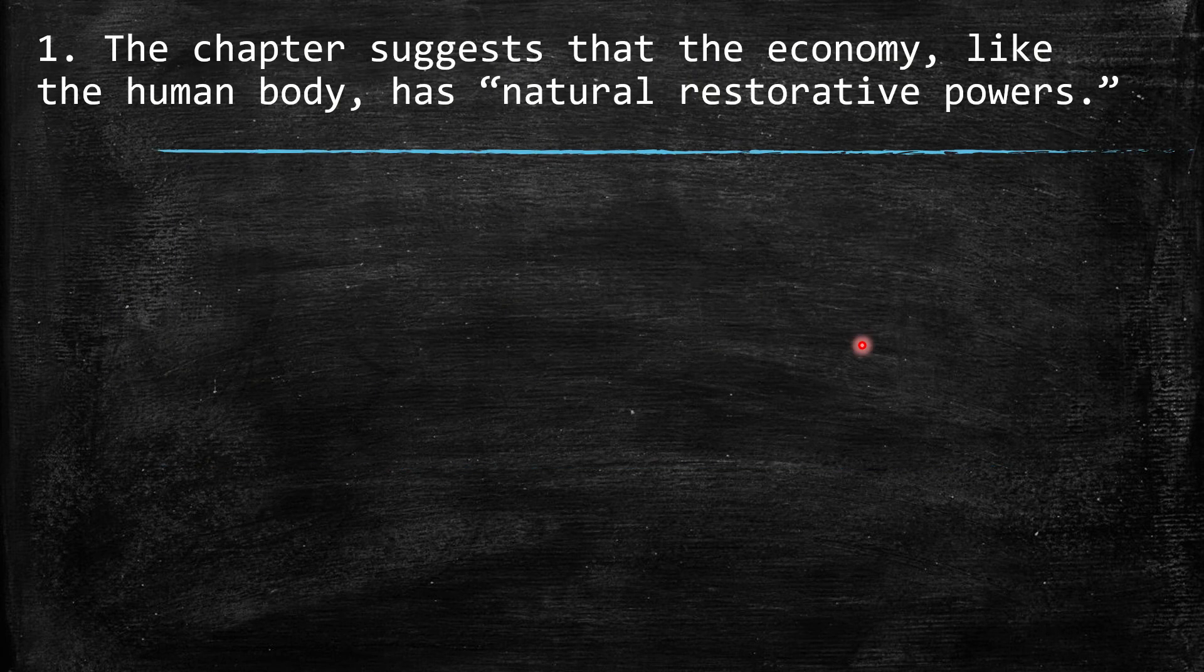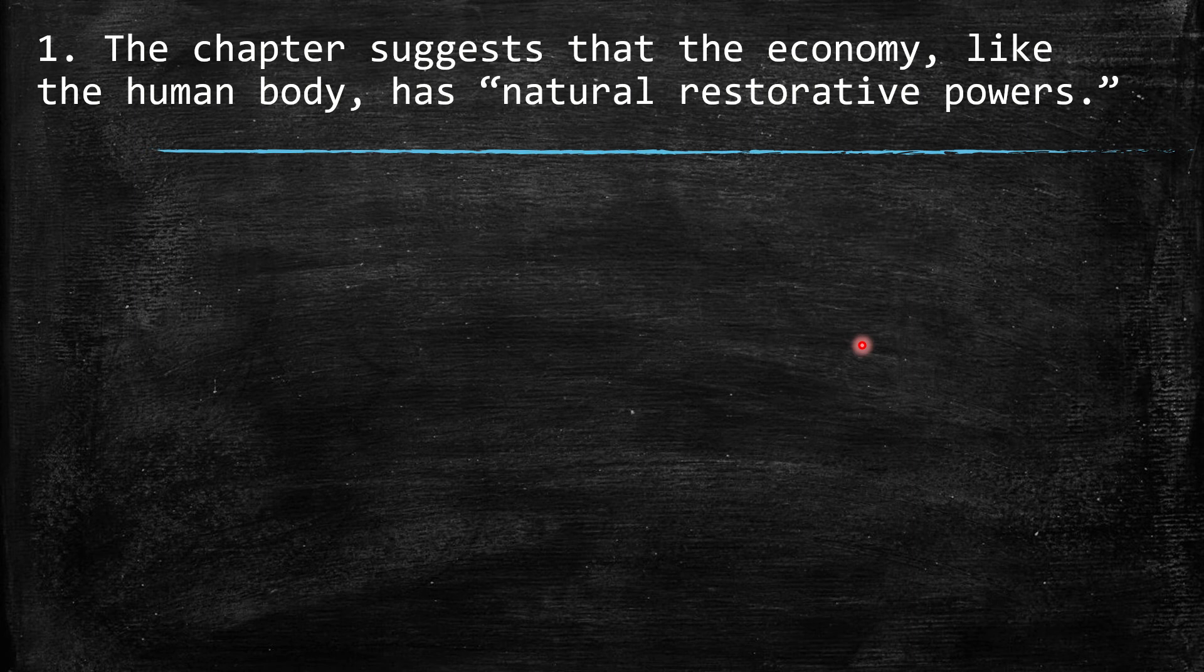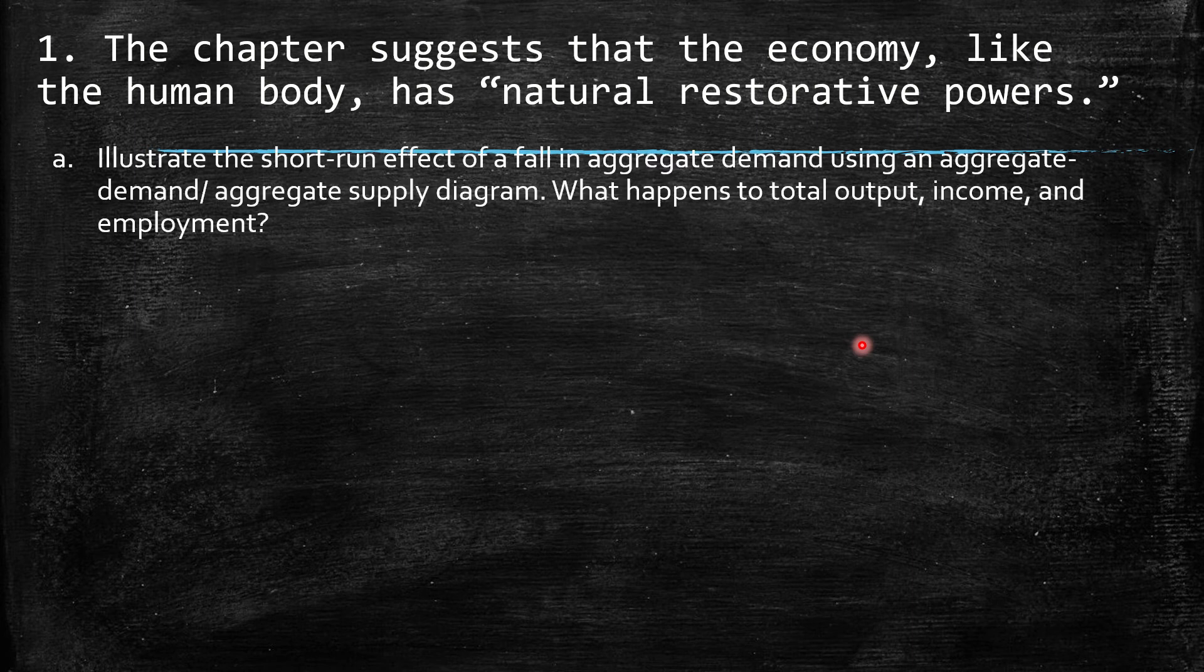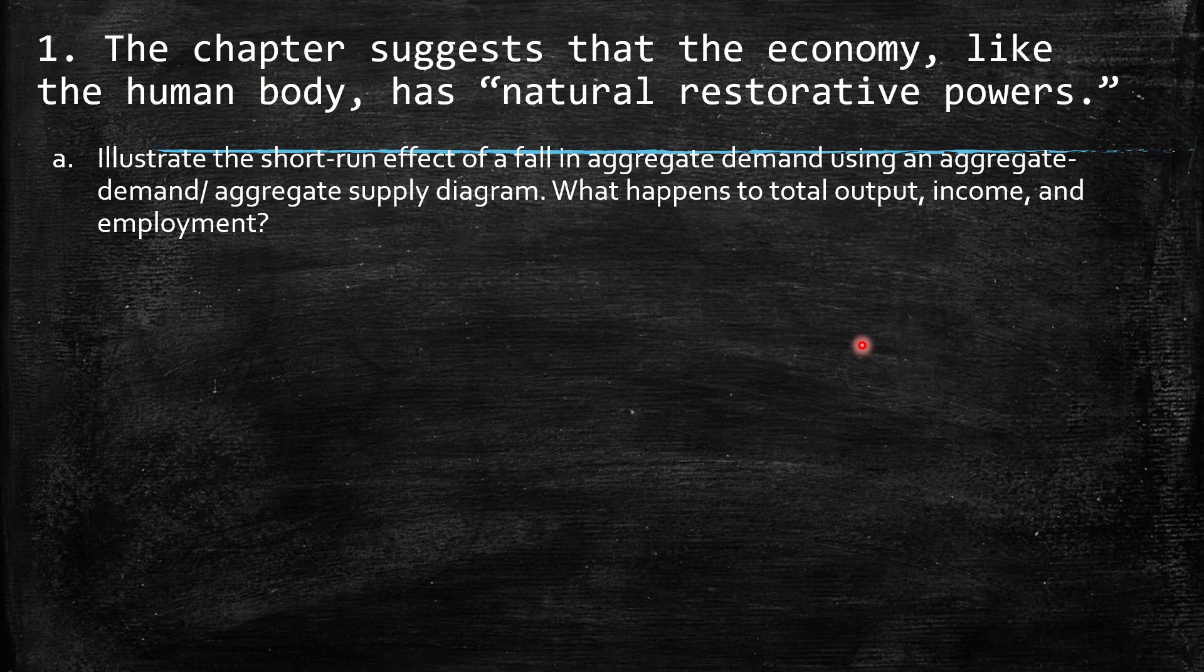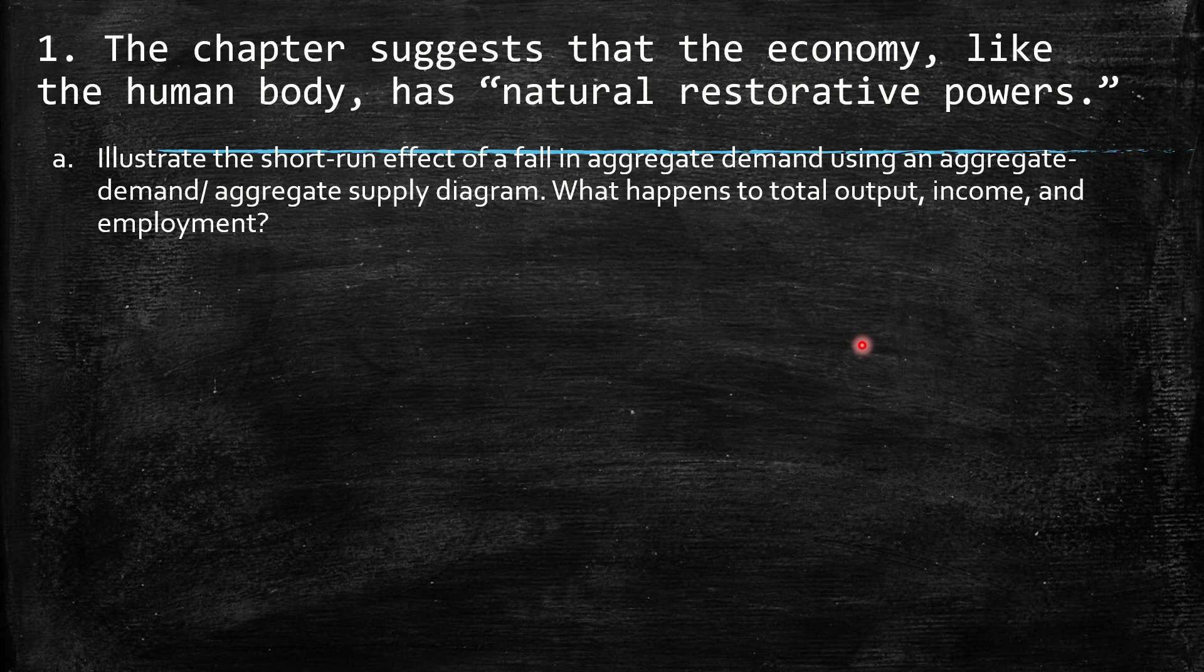So, the first question says, the chapter suggests that the economy, like the human body, has natural restorative powers. Part A: Illustrate the short-run effect of a fall in aggregate demand using an aggregate supply diagram. What happens to total output, income, and employment?